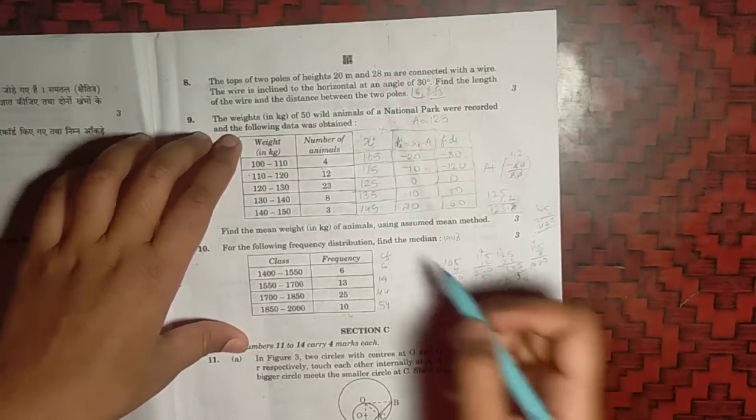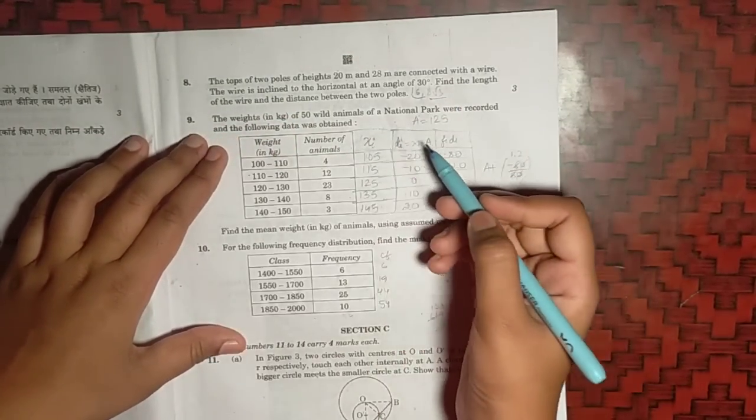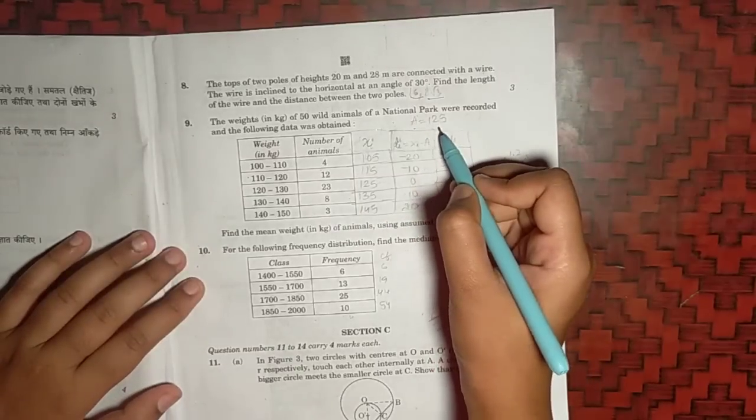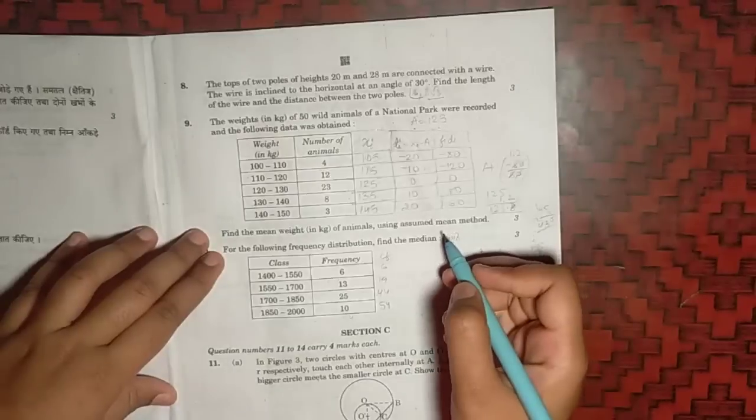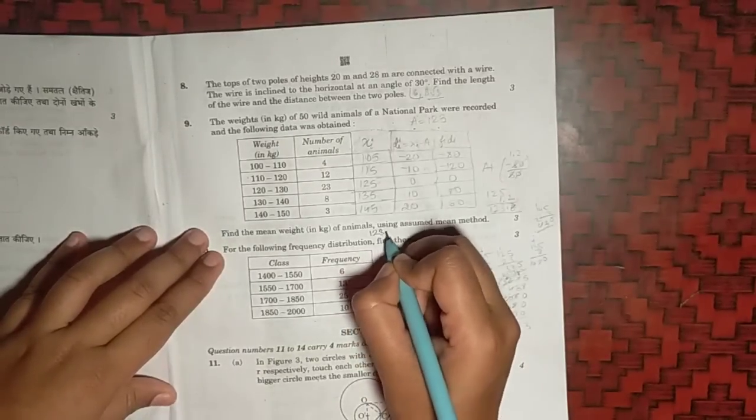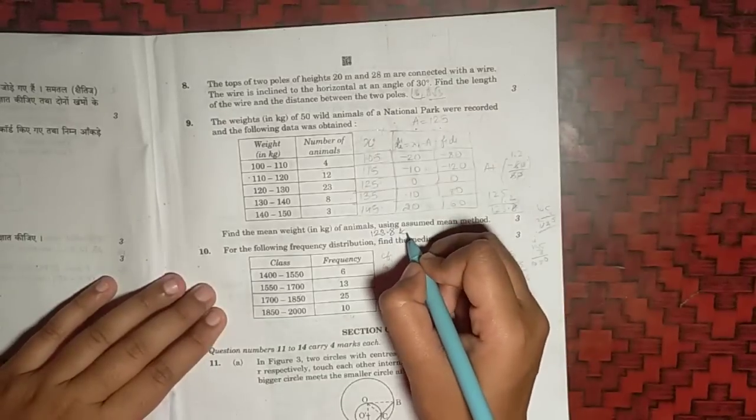Then the weight is given, we have to find the mean with assumed mean method. We will assume it to be 125, and the mean will come out to be 123.8, which will be kg.